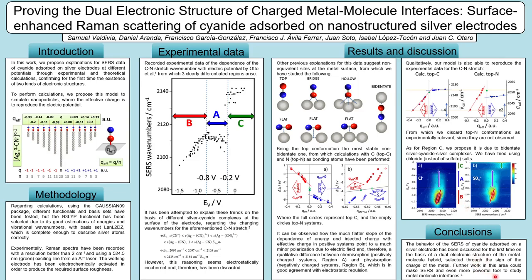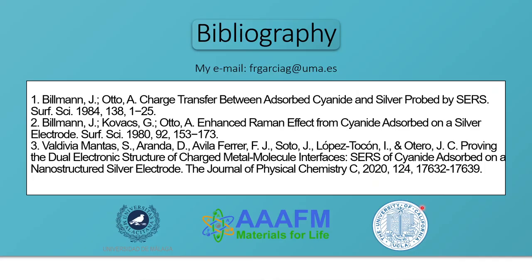In conclusion, through experimental data and theoretical calculations, we have shown that we can explain these regions and trends on the basis of two electronic structures at the surface: chemisorption and physisorption. Thank you very much for your attention and stay safe.